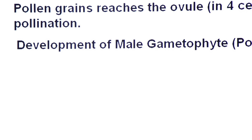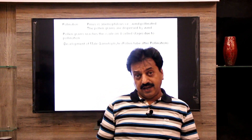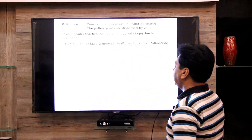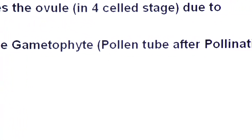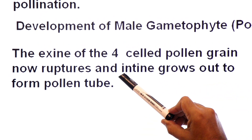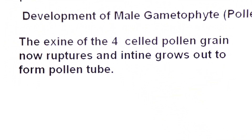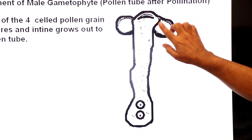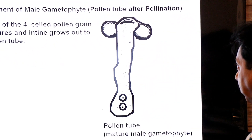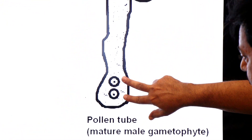Once the pollen grain lands on the female cone, the pollen tube develops. The exine of the four-cell pollen grain ruptures, and the inner layer intine grows to form the pollen tube. The pollen tube is the mature male gametophyte because it contains two male gametes known as sperm cells.